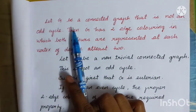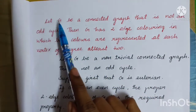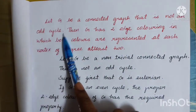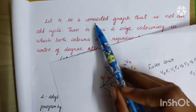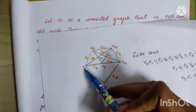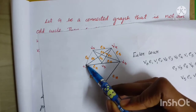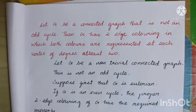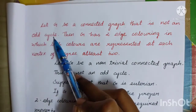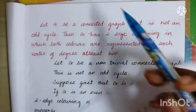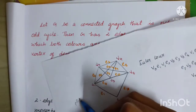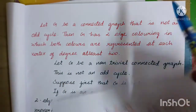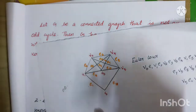Let's look at the graph here. Let G be a connected graph that is not an odd cycle. G has vertices V1 and V2 with edge E2. That is not an odd cycle — odd meaning an odd number of vertices. Not an odd cycle means an even cycle, and an even cycle has an even number of vertices.